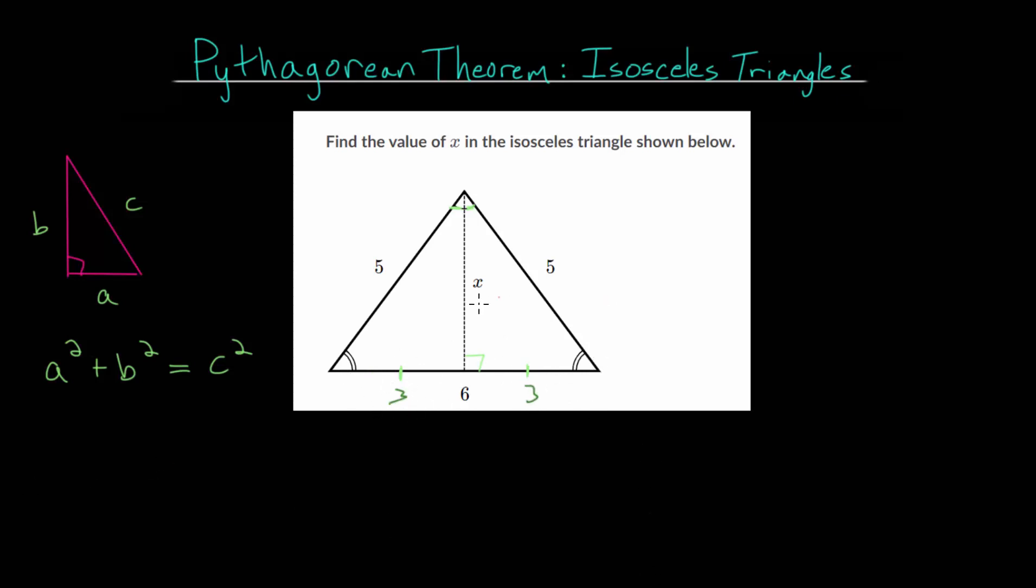And I do also want to mention that we know this is a right angle because we found that since these are two equal triangles, this angle here and this angle here have to be equal to each other. And they're also supplementary, so they have to add up to 180. And if they're both equal, that means they both have to be 90. So we have this right triangle, which means we can use the Pythagorean Theorem.